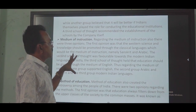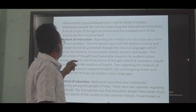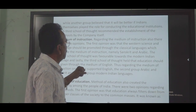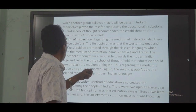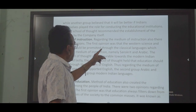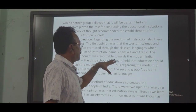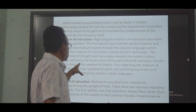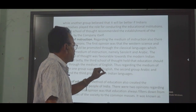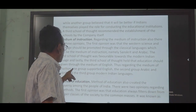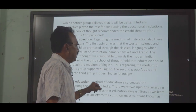The controversy also arose regarding the medium of instruction. There were three opinions: the first was that western science and knowledge should be promoted through classical languages, namely Sanskrit or Arabic, as the medium of instruction. The second school of thought was favorable towards modern Indian languages. The third school of thought held that education should be given through the medium of English.